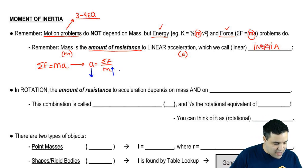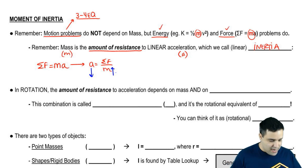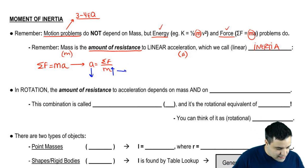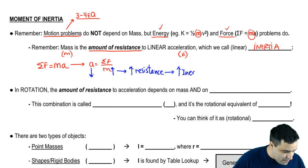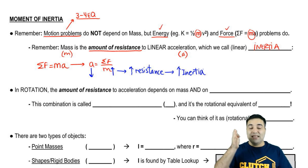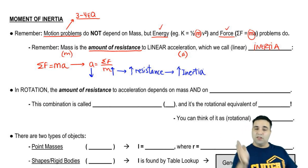So the more mass I have, the more resistance I have. And remember, resistance is inertia. The more mass, the more inertia. So we say that mass is the quantity of inertia. This is old stuff. Mass is the quantity of inertia.